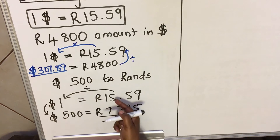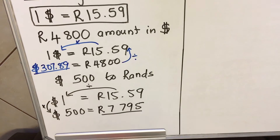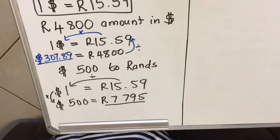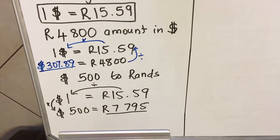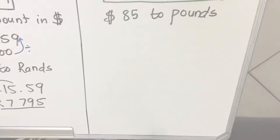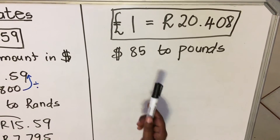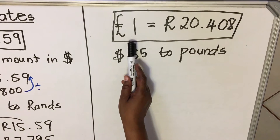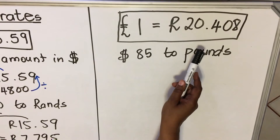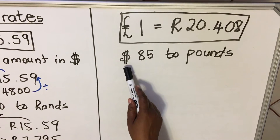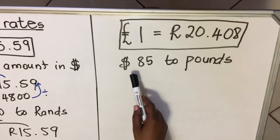The rule is: go anti-clockwise, take the number, divide first, then multiply, and you get your answer. Now let's look at when you are asked to exchange two rates — for example, dollars to pounds. If you are asked to change 85 dollars to pounds, and you're given a scale of one pound equals 20 rand 41 cents — but there's no direct scale for pounds to dollars.